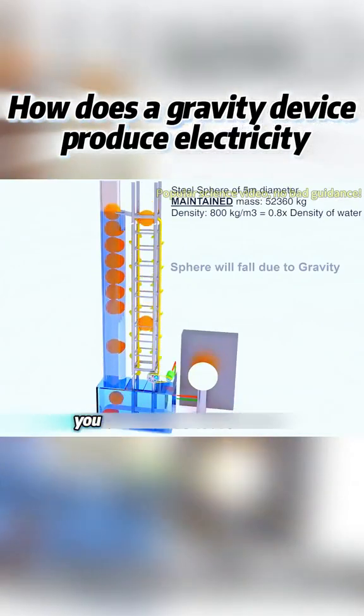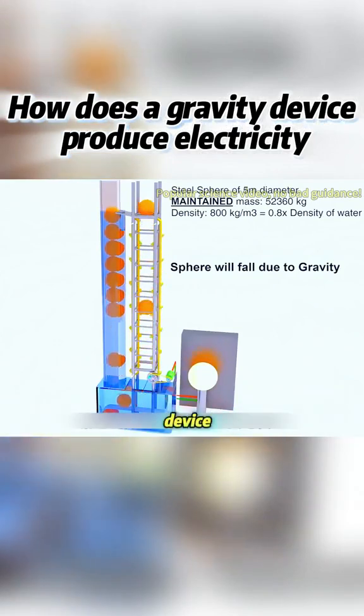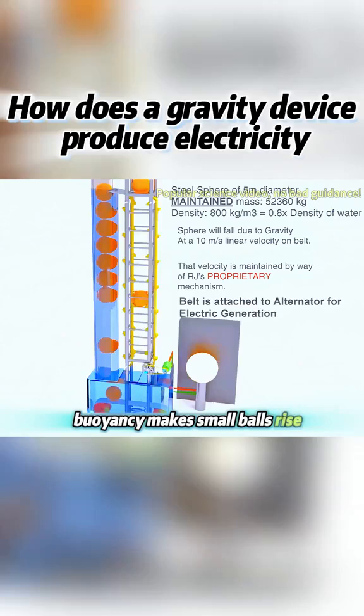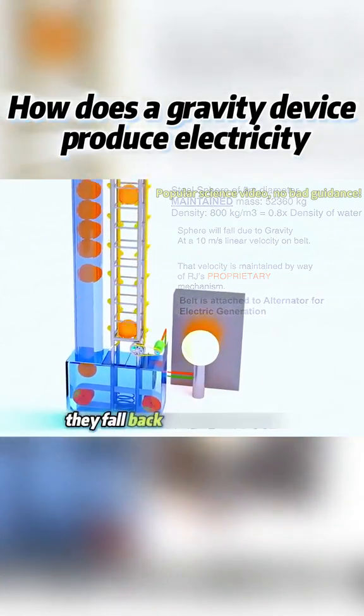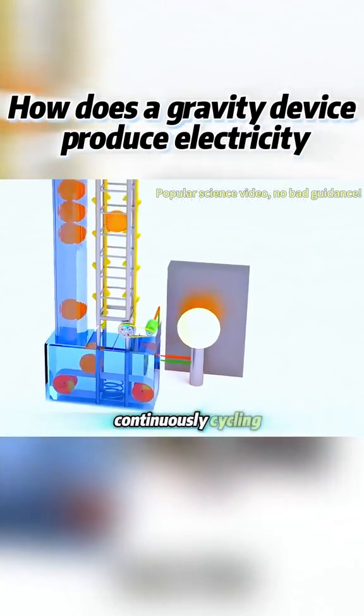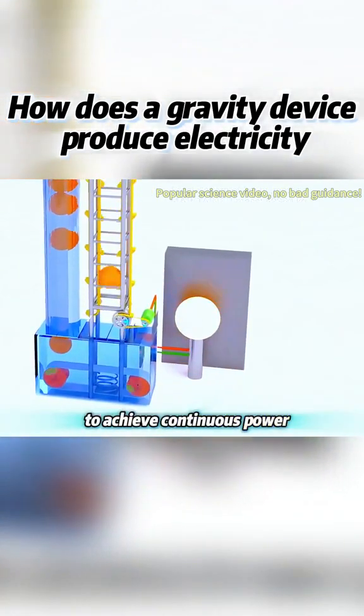Combining gravity and buoyancy, you can create a self-generating device. Buoyancy makes small balls rise, and once they rise, they fall back down due to gravity, continuously cycling to achieve continuous power generation.